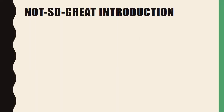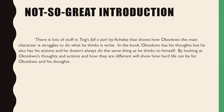So we're going to look first at a not-so-great introduction paragraph, and it goes something like this: 'There is lots of stuff in Things Fall Apart by Achebe that shows how Okonkwo, the main character, struggles to do what he thinks is right. In the book, Okonkwo has his thoughts, but he also has his actions, and he doesn't always do the same thing as he thinks to himself. By looking at Okonkwo's thoughts and actions and how they are different will show how hard life can be for Okonkwo and his thoughts.'